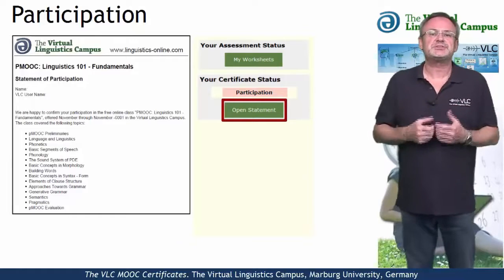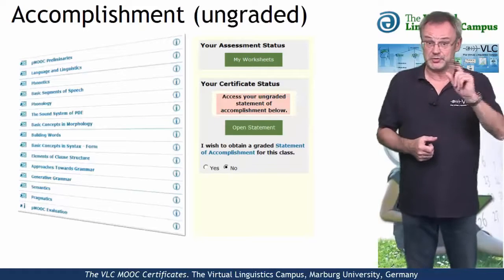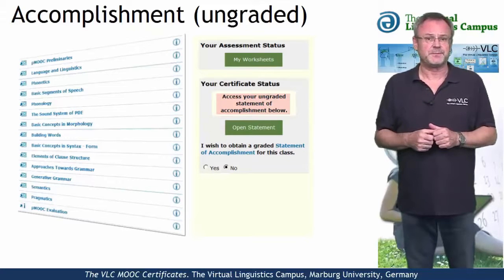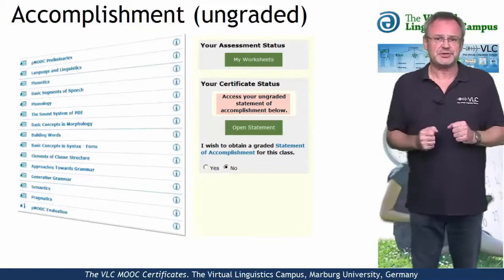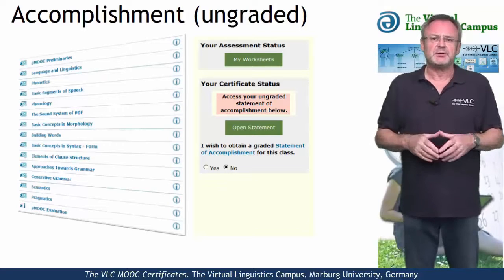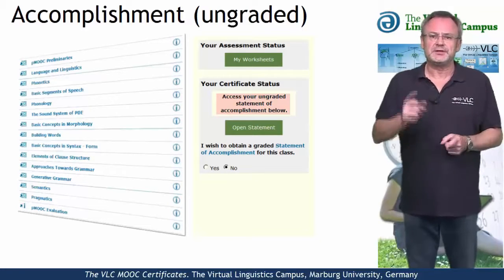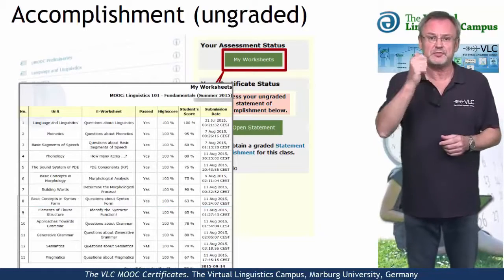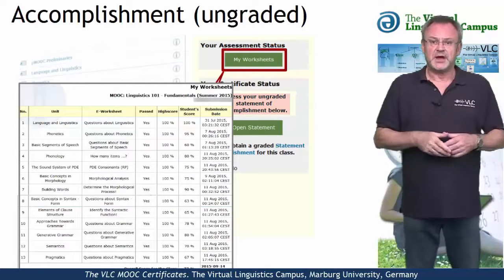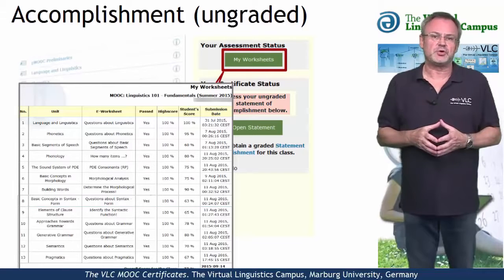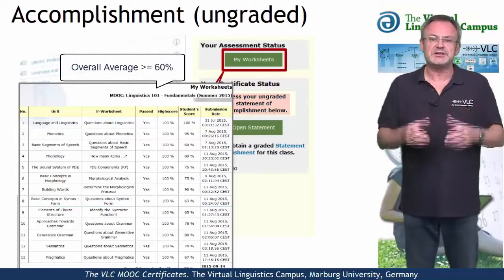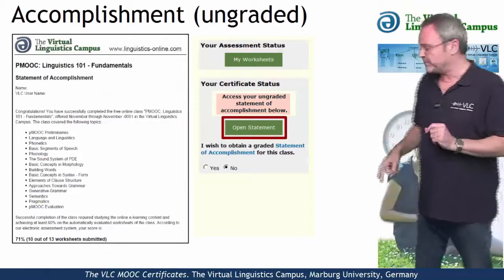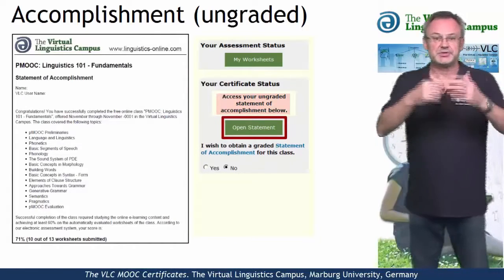The second option is the statement of accomplishment, also for free and issued by the Virtual Linguistics Campus. To be given such a certificate, we not only want your regular participation, but we also want you to do the Mastery Worksheets — our electronic tests, one for each unit — and we want you to achieve an overall score of at least 60% across all the worksheets. A simple click on the Open Statement button and the certificate is yours.